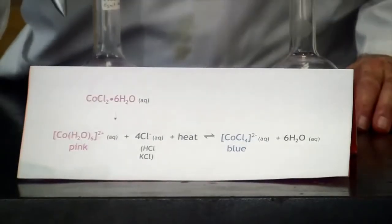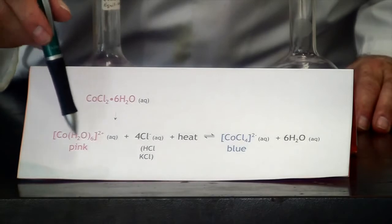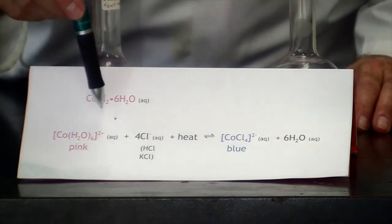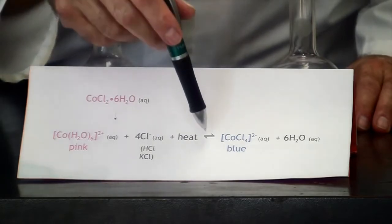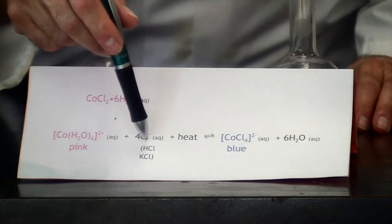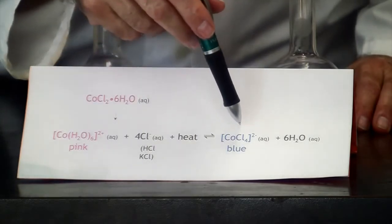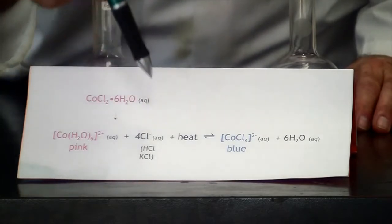Let's look at the equation here. You can see that the cobalt surrounded by water gives us the pink color, and according to Le Chatelier's principle, in this equilibrium if we add chloride in the form of either HCl or KCl we should get a shift to the blue color. So let's try each one.